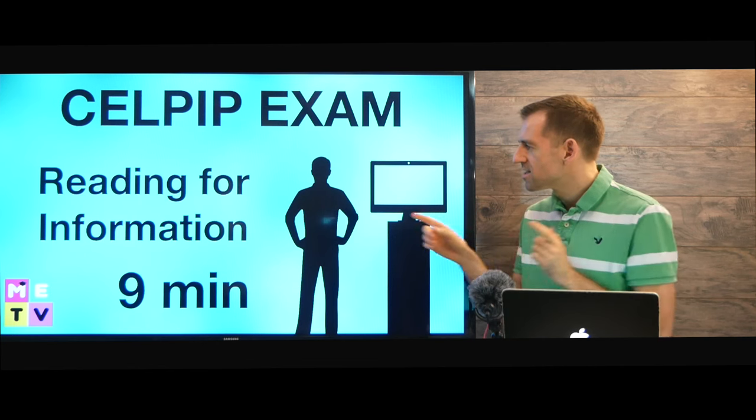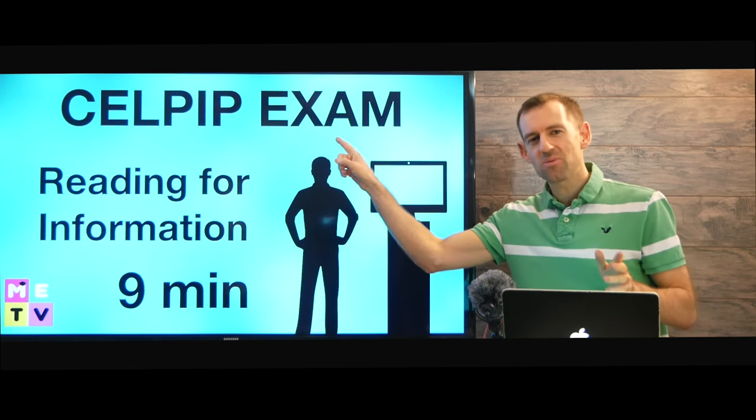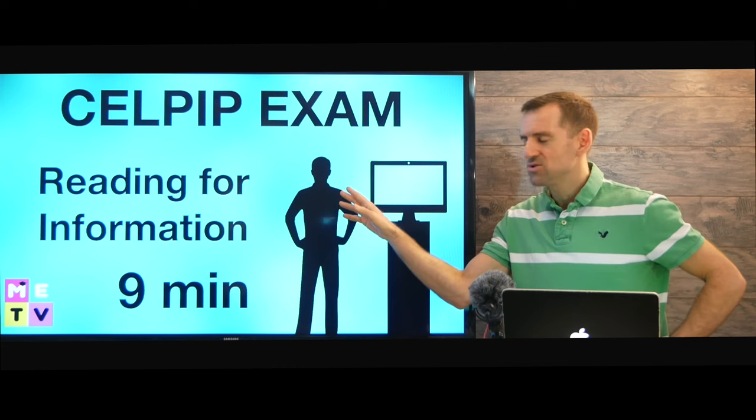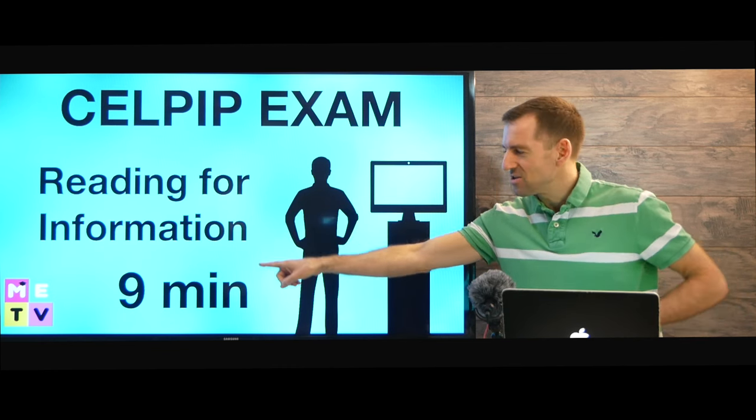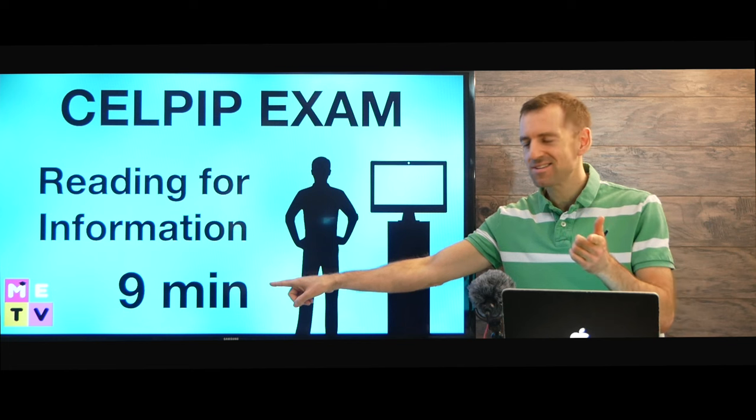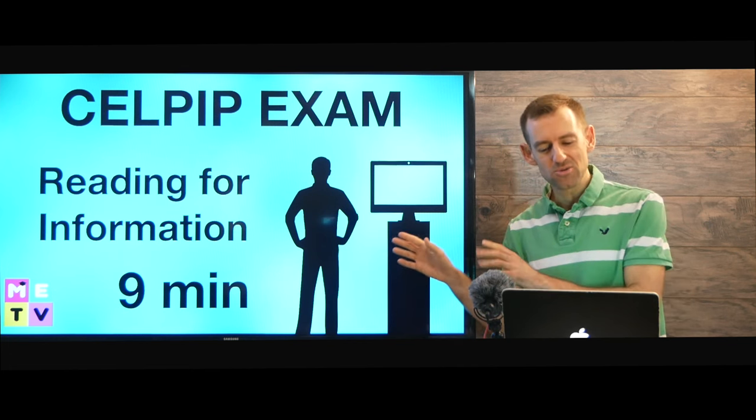This guy's taking the CELPIP exam and he's doing the reading part of the exam. Now on the reading test there are four parts. The third part is called reading for information. You have nine minutes to answer nine questions. Do you think you can do it? Well in this lesson I'm going to teach you how to do it.